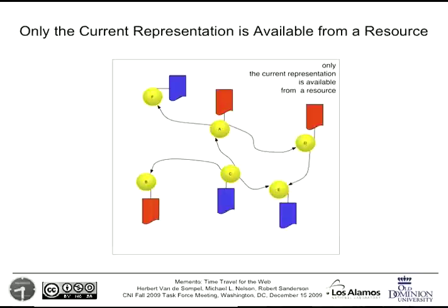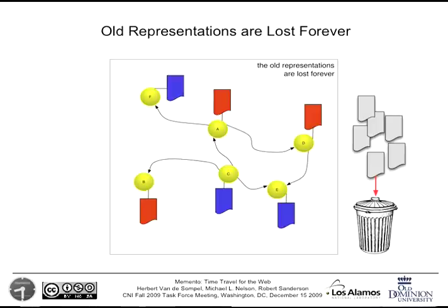The way HTTP works is that at any moment you can only get the current representation of a resource. Type CNN.com in your browser and you get the page as it exists now. The old representations — from yesterday, last year, the year before — are gone. That's a little white lie, because there are actually pockets on the Web of old, archived versions of resources.